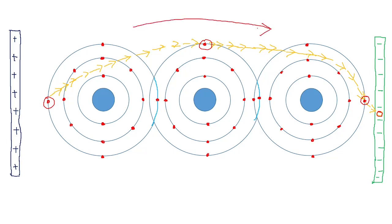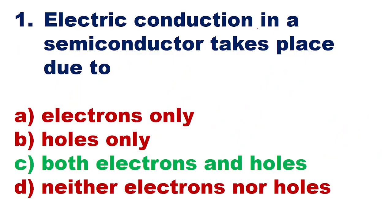Both electrons and holes travel in opposite directions, meaning in a semiconductor, electric conduction takes place due to both electrons and holes. Therefore, option C — electric conduction in a semiconductor takes place due to both electrons and holes — is the correct answer.